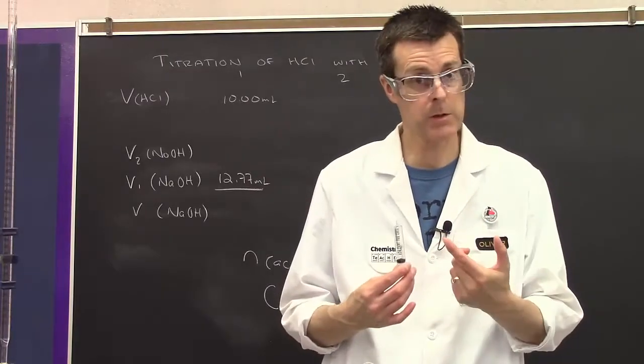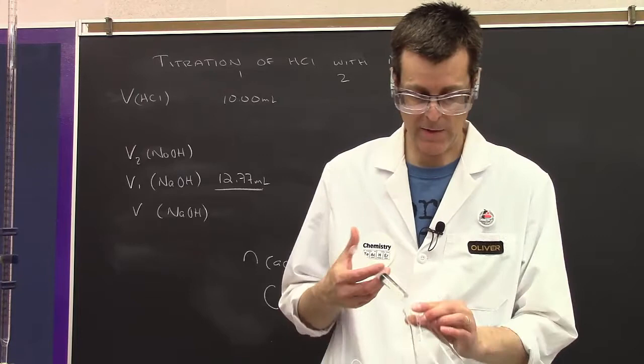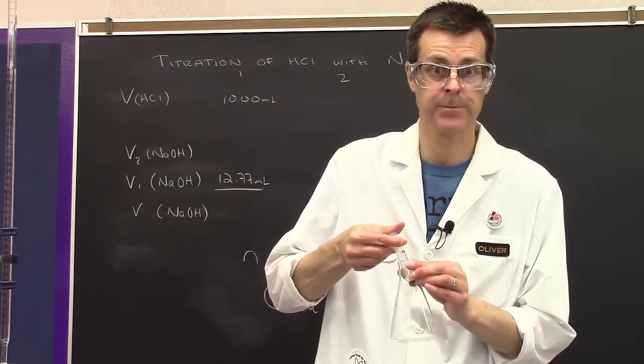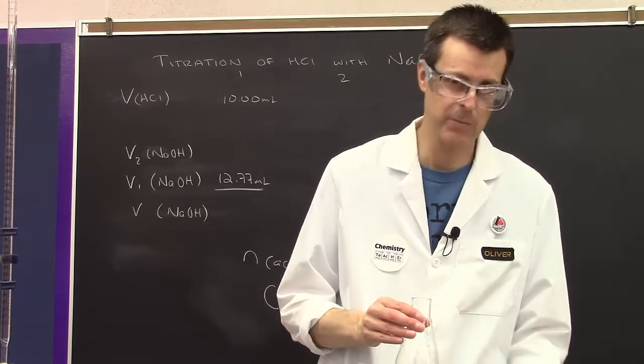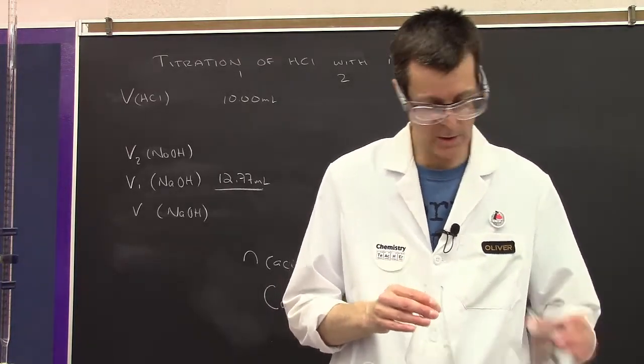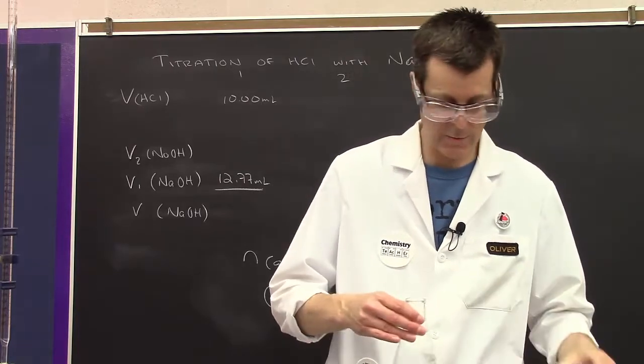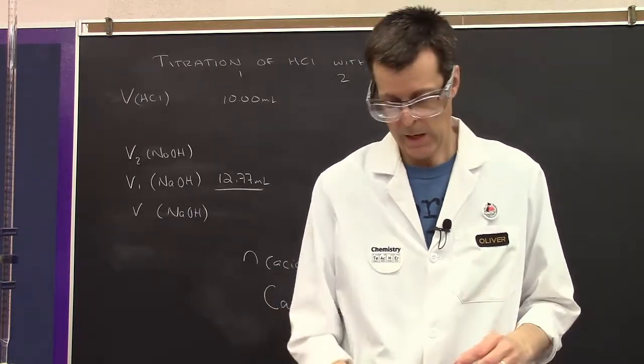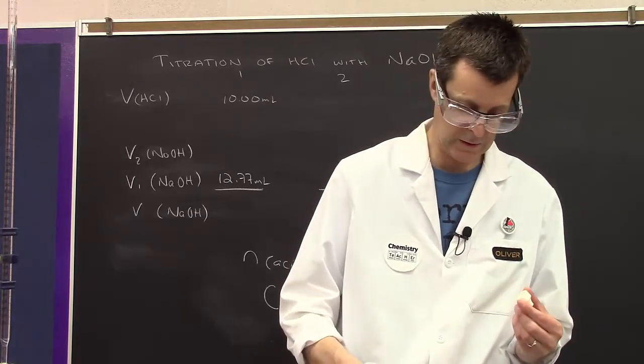I have 10 milliliters of acid in my syringe. I'm going to add that to my flask. Then I'll add some distilled water - the amount isn't really important, it's just there to make sure things mix well. I'm going to add my two drops of phenolphthalein indicator again.